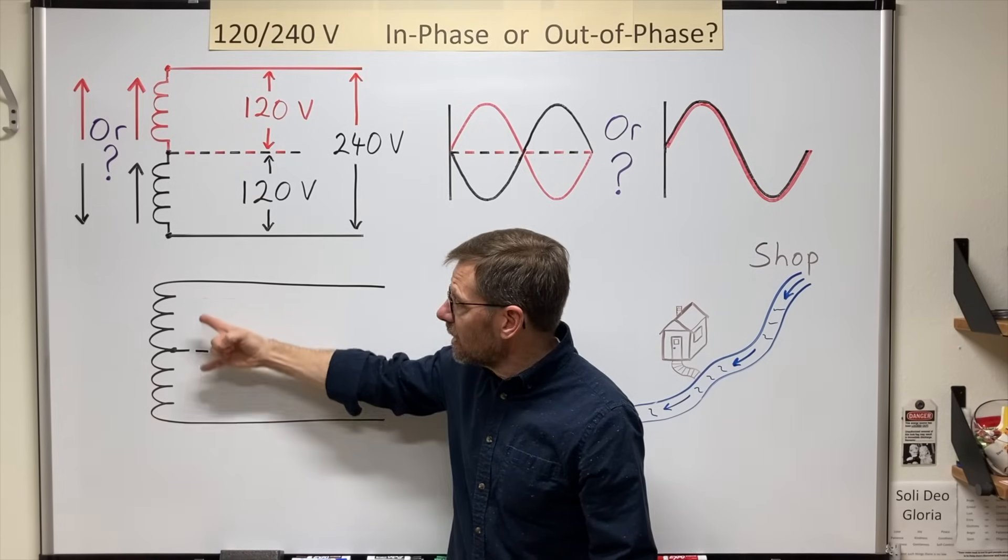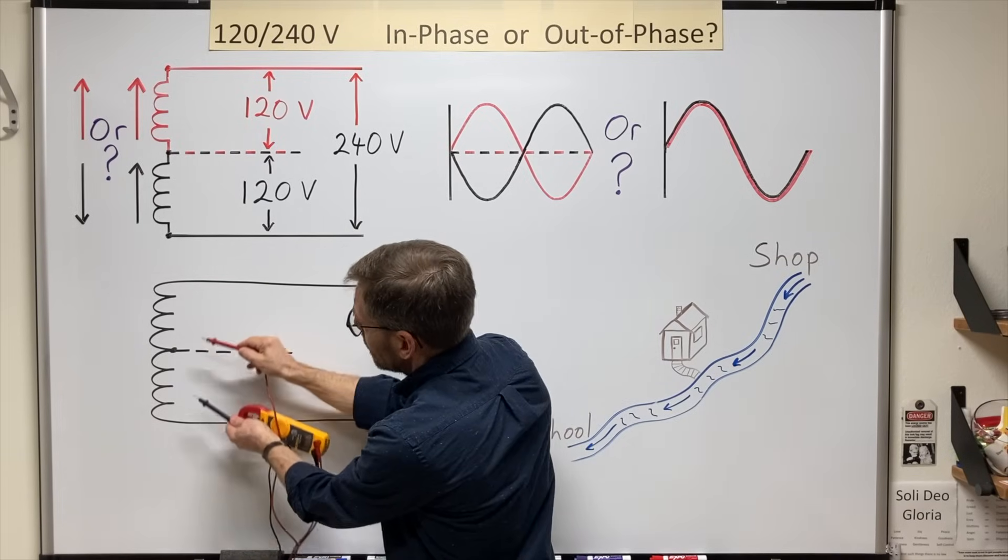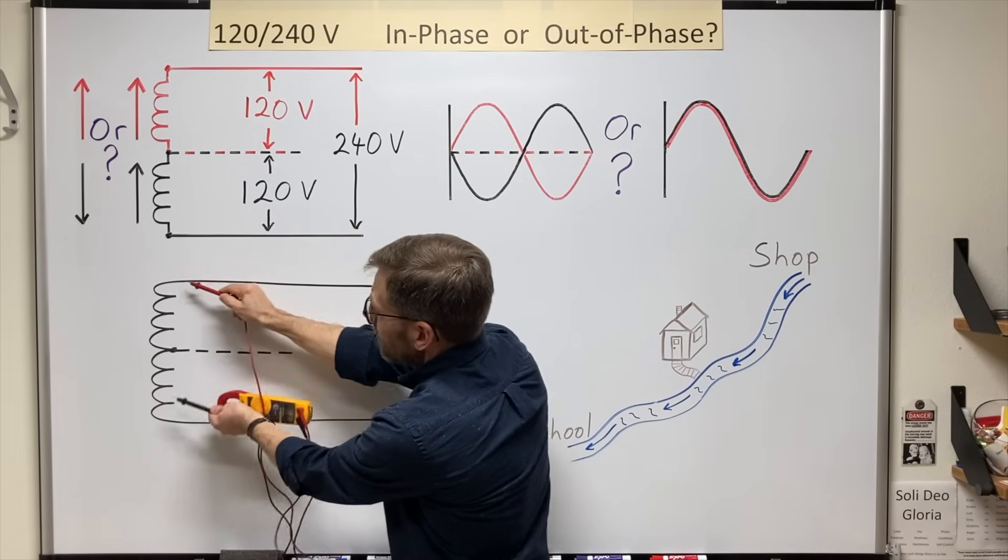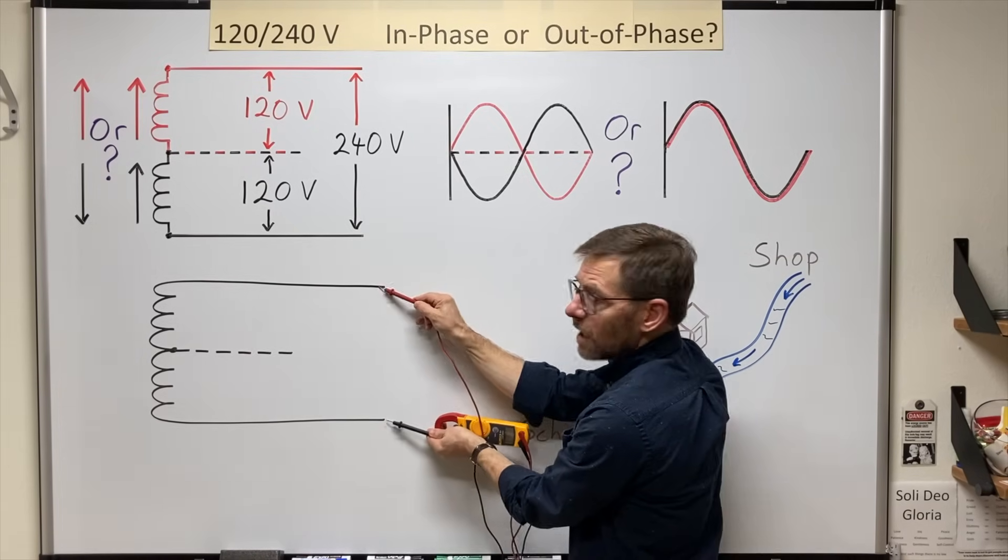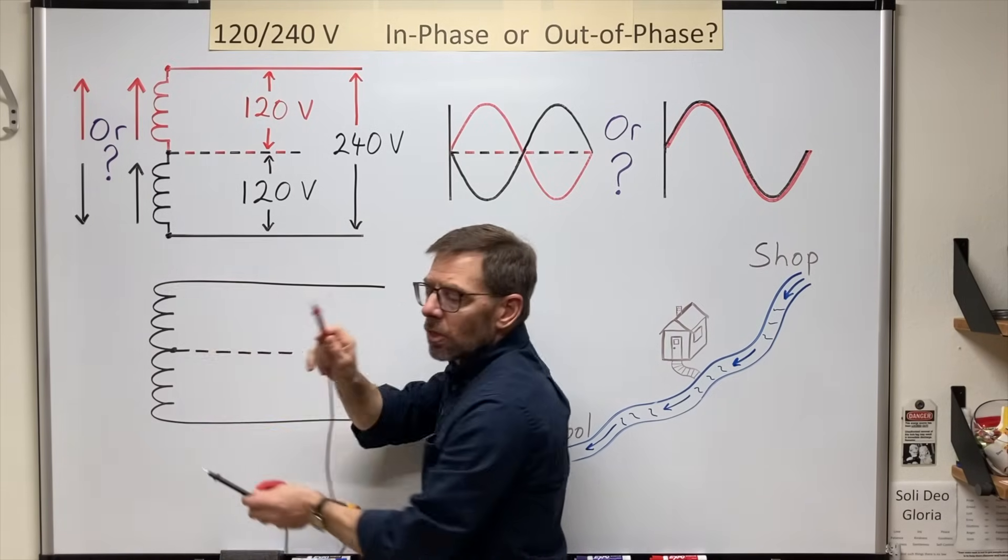So if I have the same number of turns here as I have here, I should be able to get 120 volts here, 120 here, and then I want to get 240 from hot to hot, or 240 volts across the full winding.